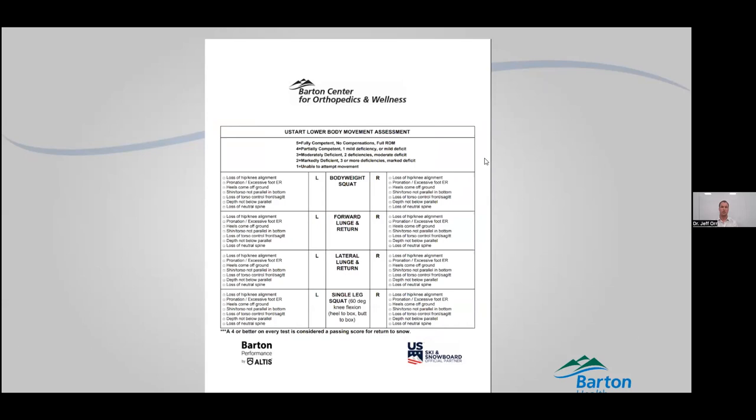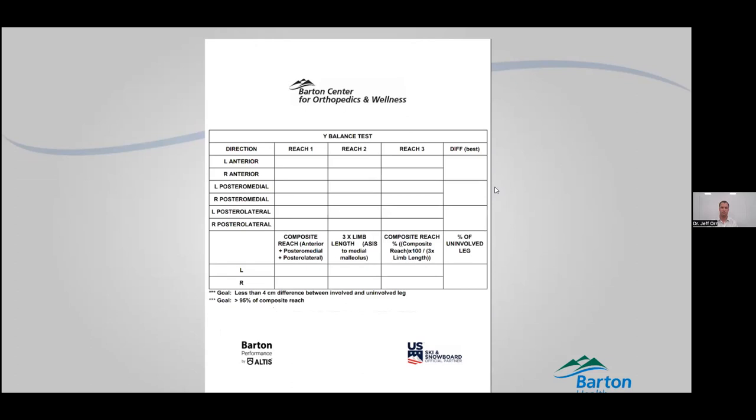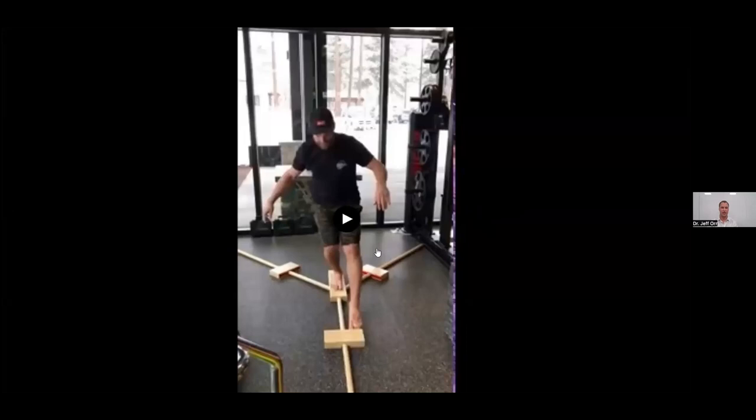The strengthening assessments include body weight squat, lunge, lateral lunge, and single leg squat — again right versus left, operative side versus non-operative side, so we have something to easily compare. For the balance test, we have a Y-shaped board on the ground and will have you put your leg in different directions and see how your balance is. We have Travis Ganong — who recently retired — demonstrating the Y test here.